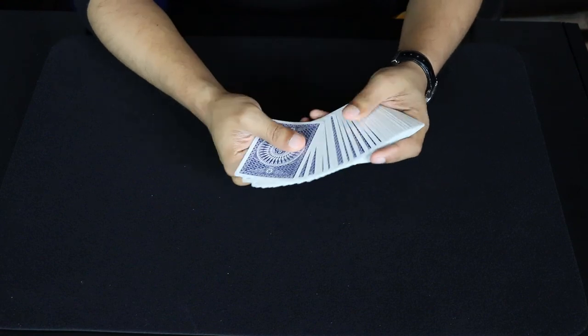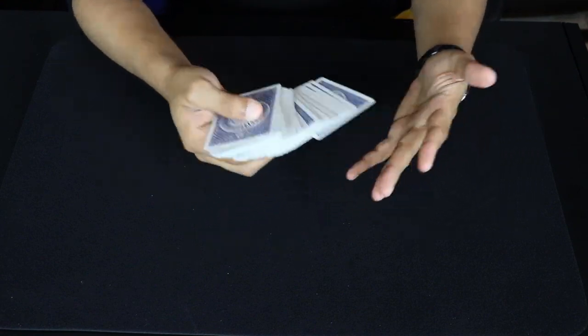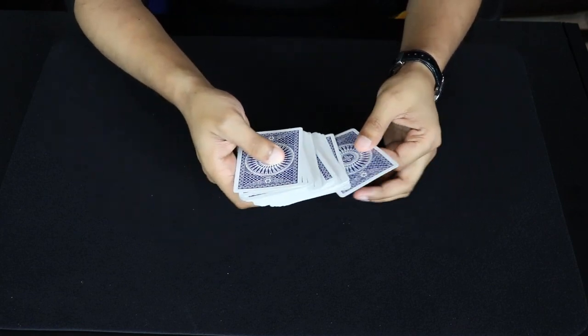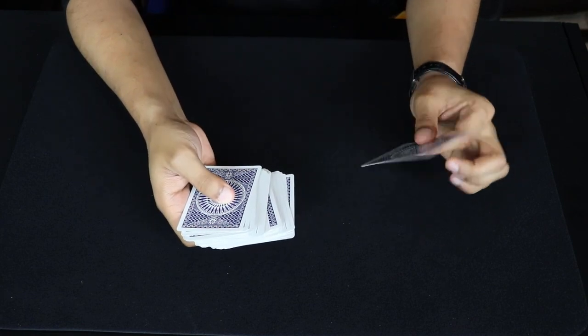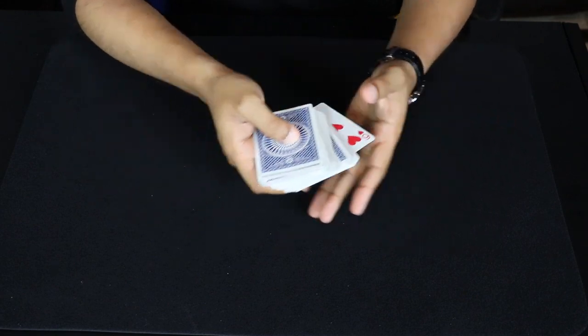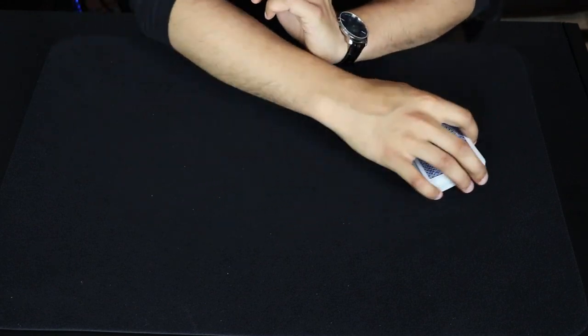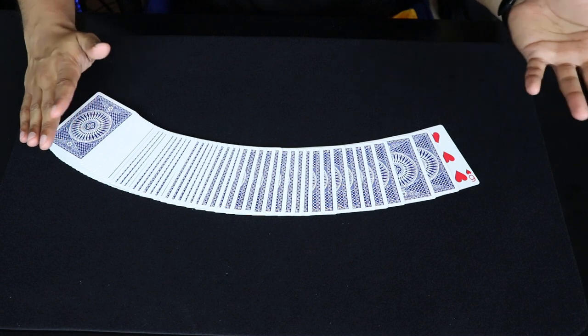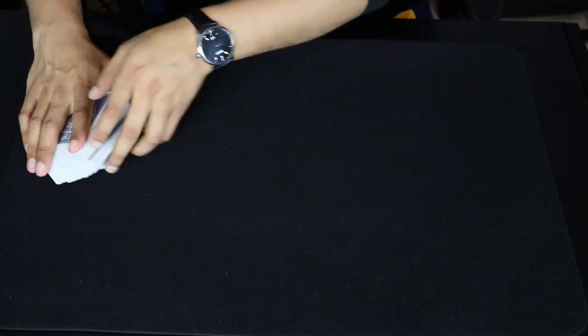So we start off, of course, with a regular deck, and what we have to do before even doing anything is you have to turn the bottom card. You pretty much flip over the bottom card and put it on the bottom of the deck. So this way, when the cards are spread out, you'll see this card is flipped over on the bottom, the rest of the cards are all fine.